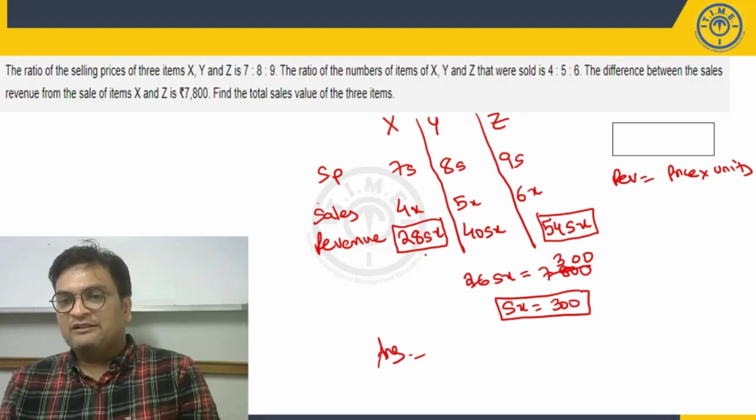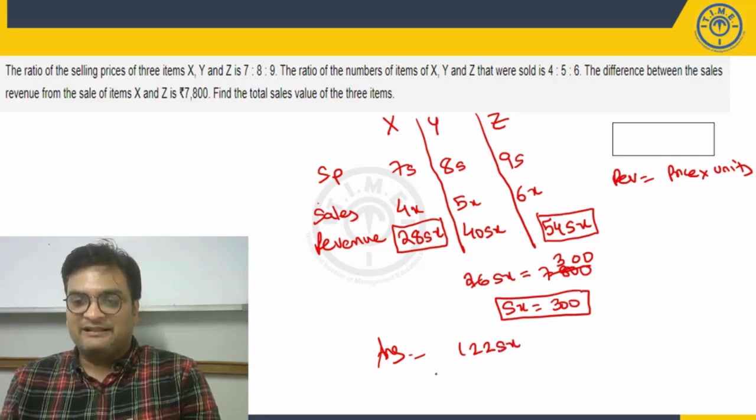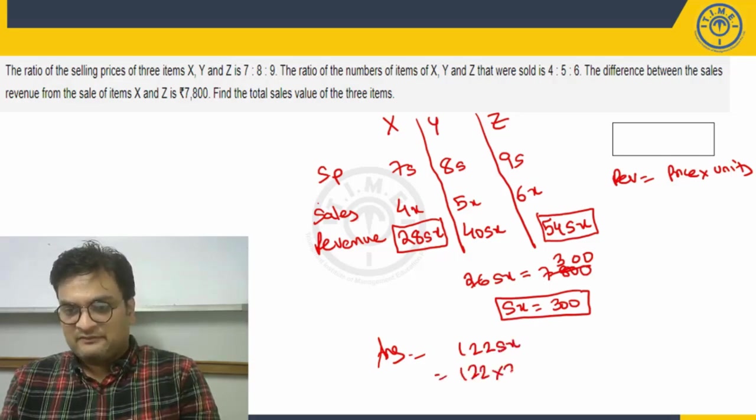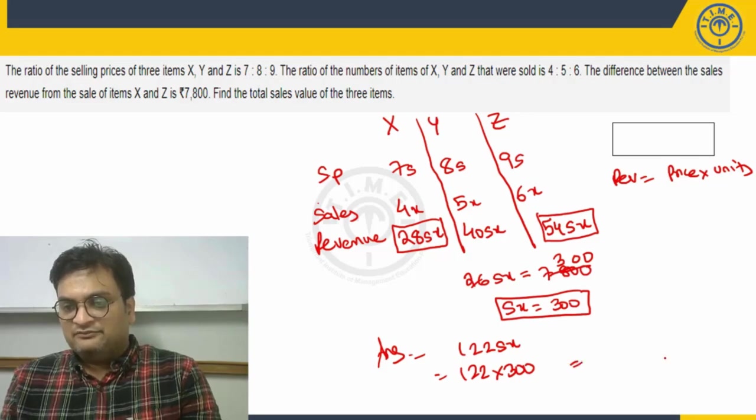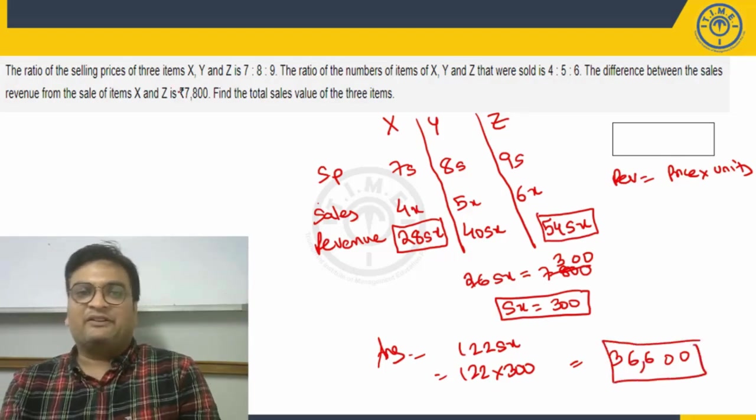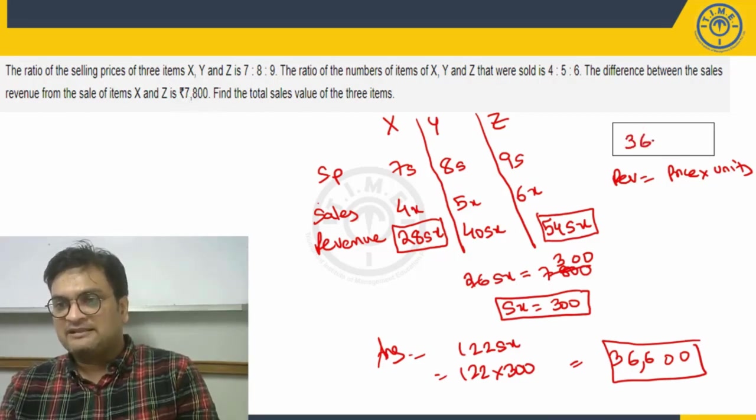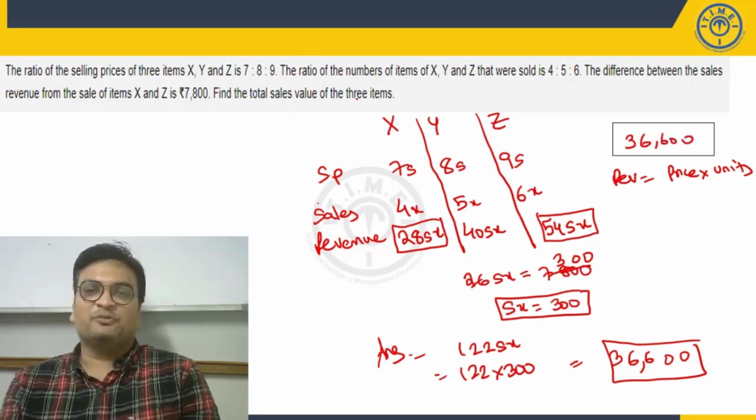Can I say my answer is going to be simply sum of all these. When you add it 94, 122sx and we know sx is 300. This double zero will come at the end, 3 into 122 is 366. So 36,600 rupees, since the units are rupees here, is going to be our answer. Find the total sales value, it is going to be 36,600 rupees, of course.